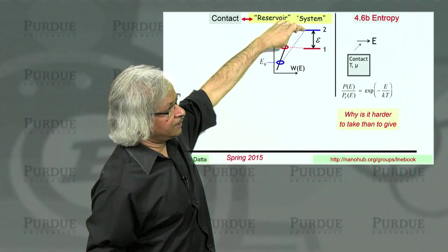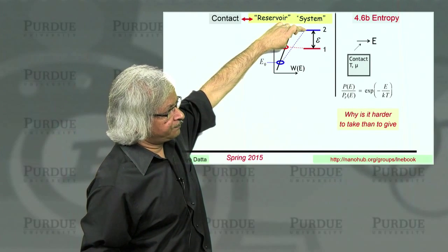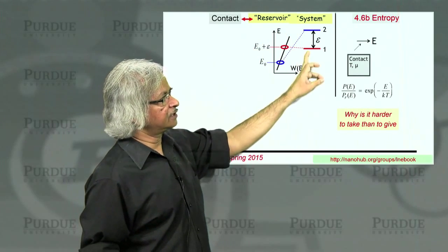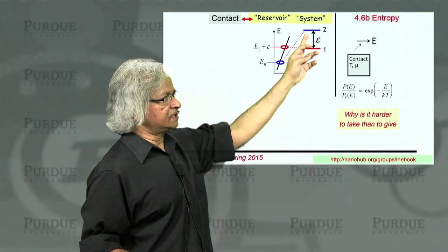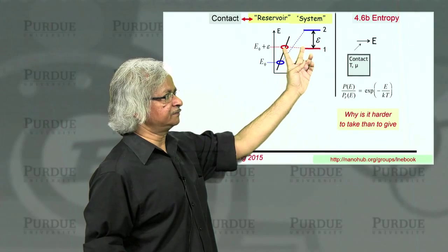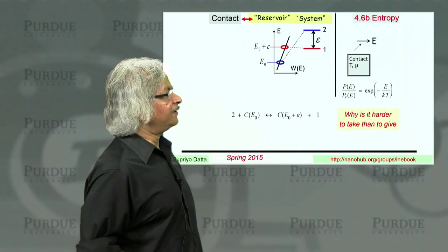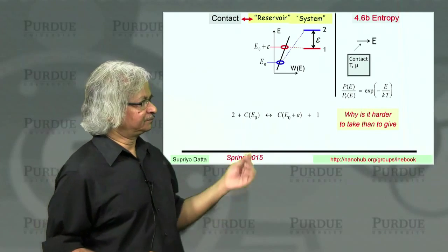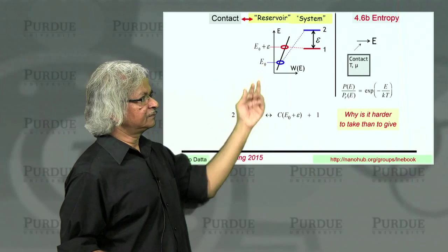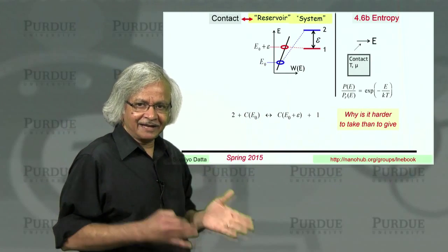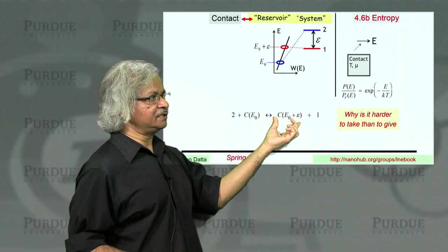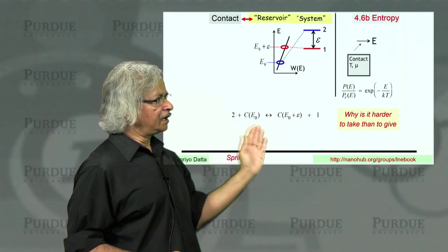But the way it works then is, when the electron is in state two, the reservoir has an energy E zero. But when the electron is in state one, the reservoir, since the electron has less energy, the reservoir must have more energy. So you could kind of write it like a reaction, a chemical reaction. The two plus contact with energy E zero, that's kind of your reactants. And the resultants is, electron is in one and the contact is in E zero plus epsilon.